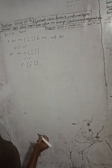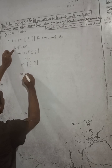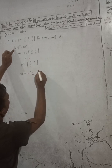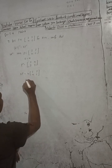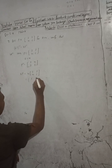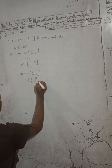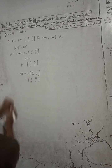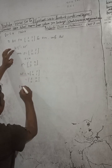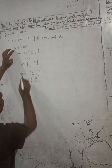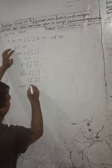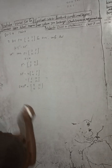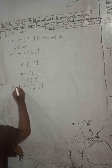So P transpose is [2, 4; 3, 5]. Now KP — K value is 4 and P is [2, 3; 4, 5]. Computing KP and then taking the transpose: the first row becomes the first column giving 8, 12, and the second column gives 16, 20. So this is our LHS.